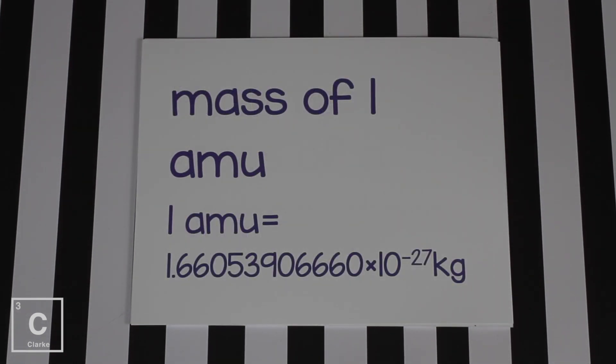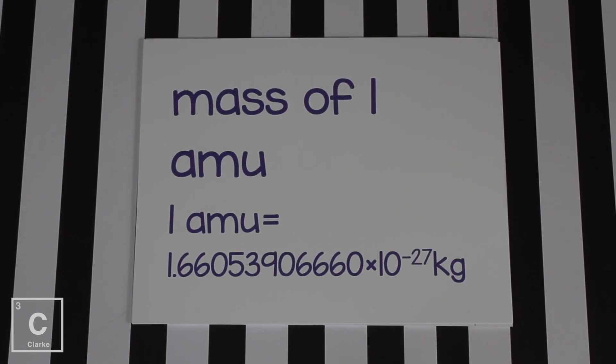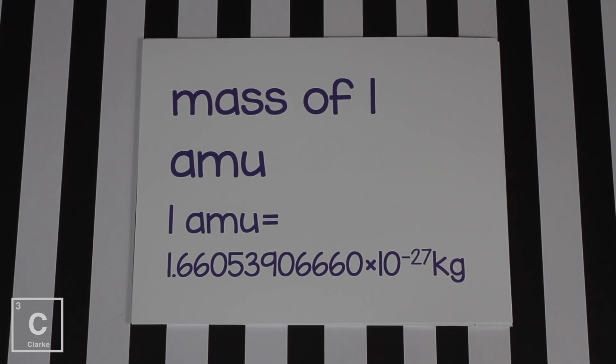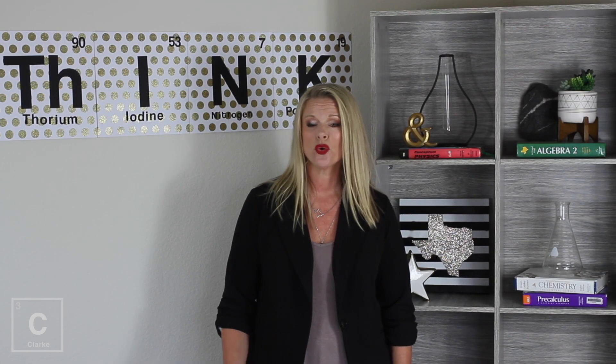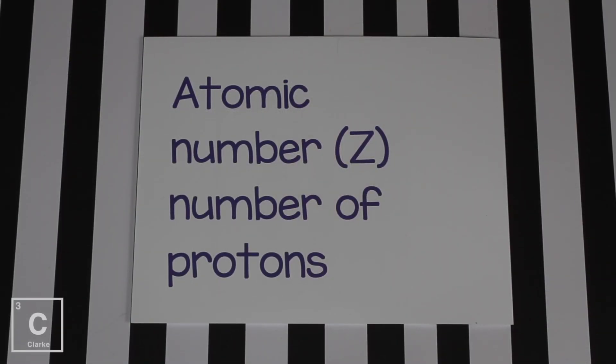Protons have a mass of 1 AMU. Atoms are so tiny — look at that: 1 AMU is 10 to the negative 27 kilograms. We do not want to talk about atoms in those terms. Atomic mass unit is a unit created just for atoms. John Dalton used the fact that there are 12 particles in the nucleus of a carbon atom and said one of those particles is just going to be 1 AMU.